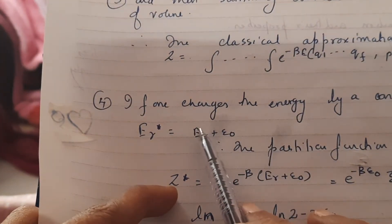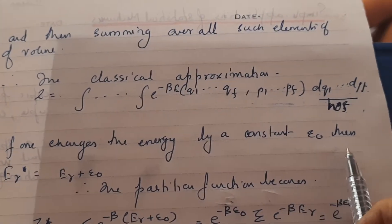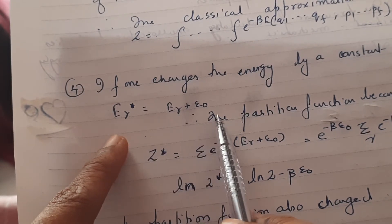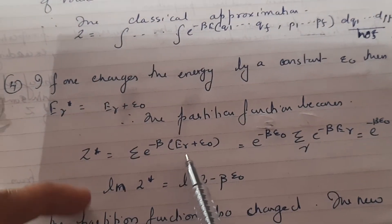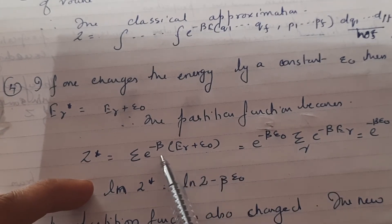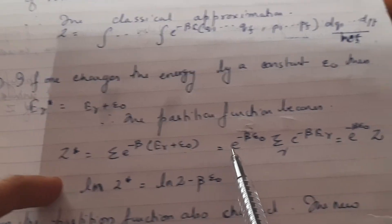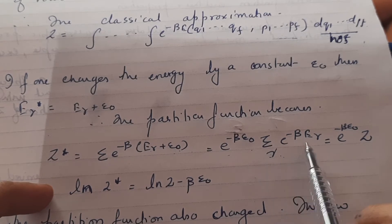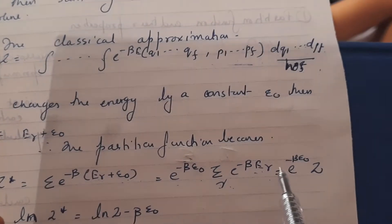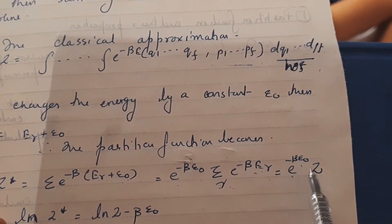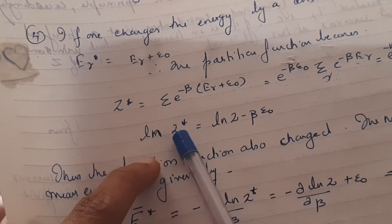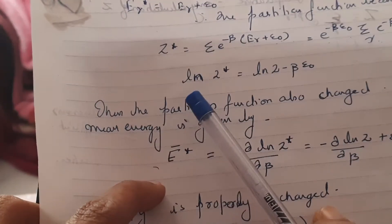If one changes the energy by a constant epsilon_0, the energy of state r becomes E_r plus epsilon_0. The partition function then becomes summation over r of e raised to minus beta times (E_r + epsilon_0), which equals e raised to minus beta epsilon_0 multiplied by summation over r of e raised to minus beta E_r. This is just e raised to minus beta epsilon_0 times Z, where Z is again our original partition function.